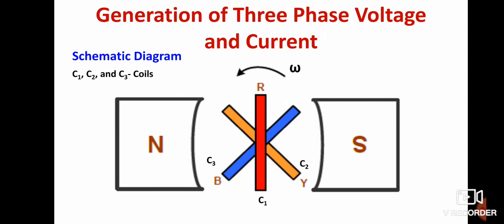This is how to produce three-phase voltage and current. If the circuit is closed, current starts flowing, similar to single-phase AC generation. The difference is that here we use three coils kept 120 degrees apart. There are also changes in the waveforms.